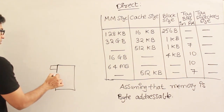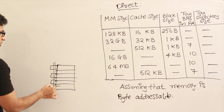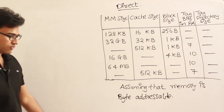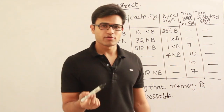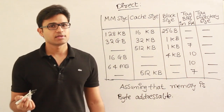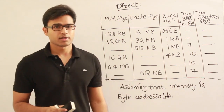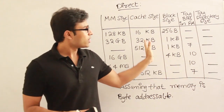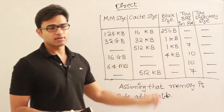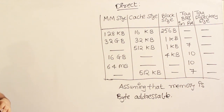Earlier we had four lines and each line had tag bits. All those bits together form the tag directory. Along with tag bits, the tag directory for every line can also contain valid bits and modified bits — similar to page table entries. If there are more bits in the tag part of each line, the tag directory size increases. The cache size given is without tag, and we need to find the total tag directory size.